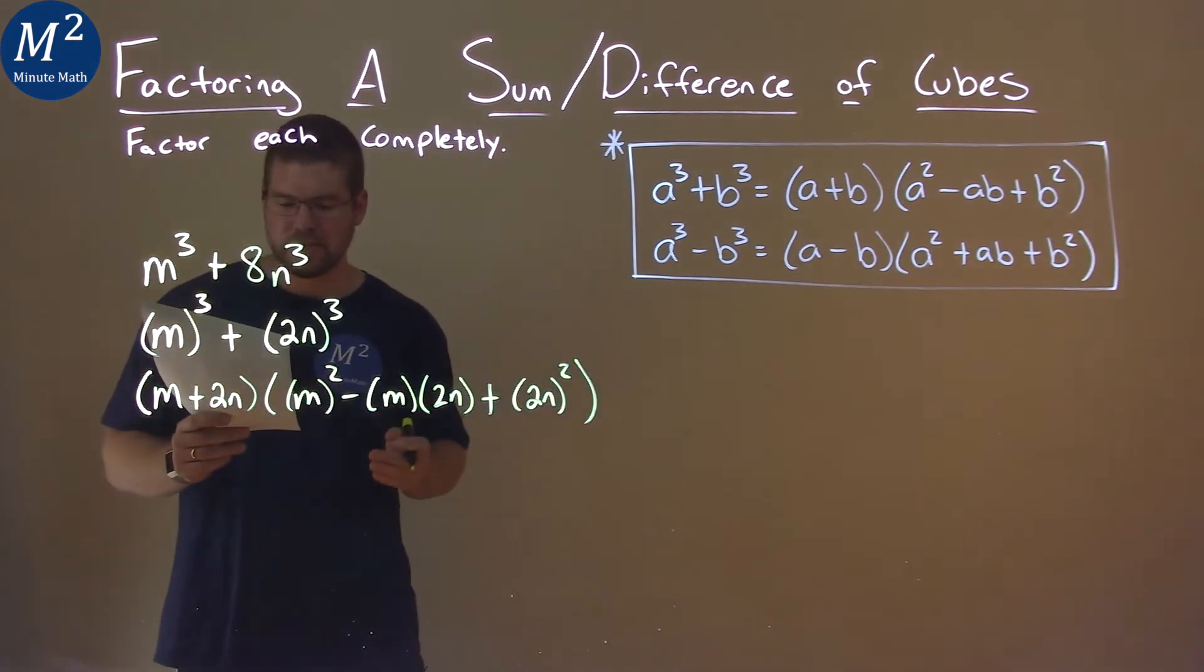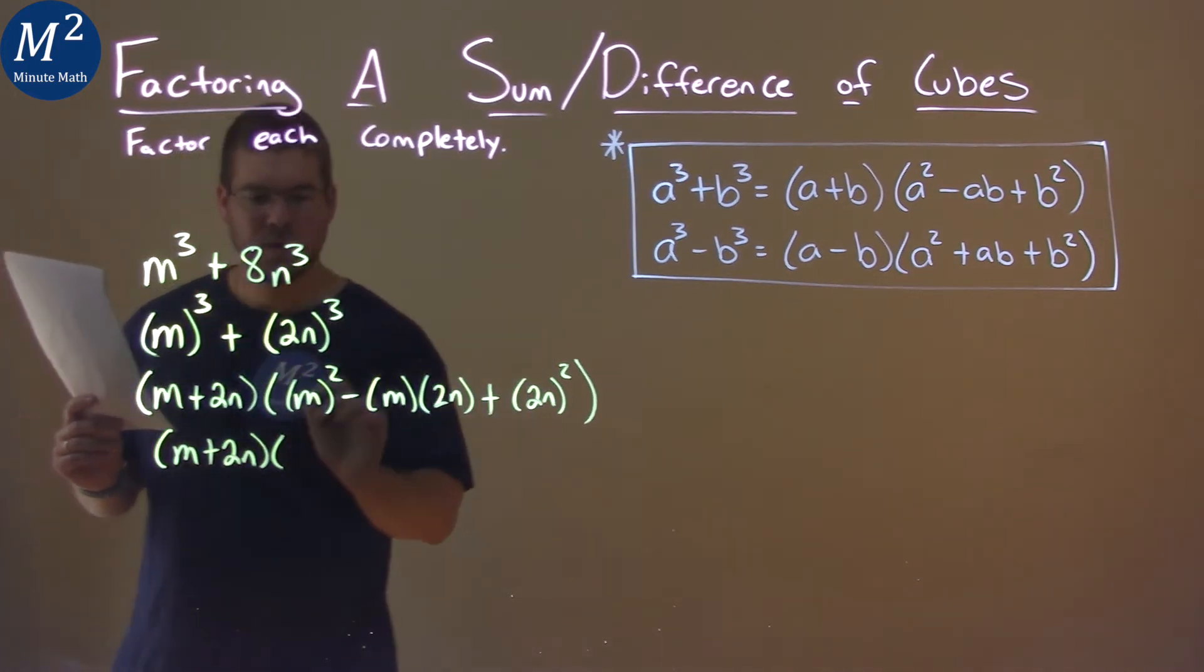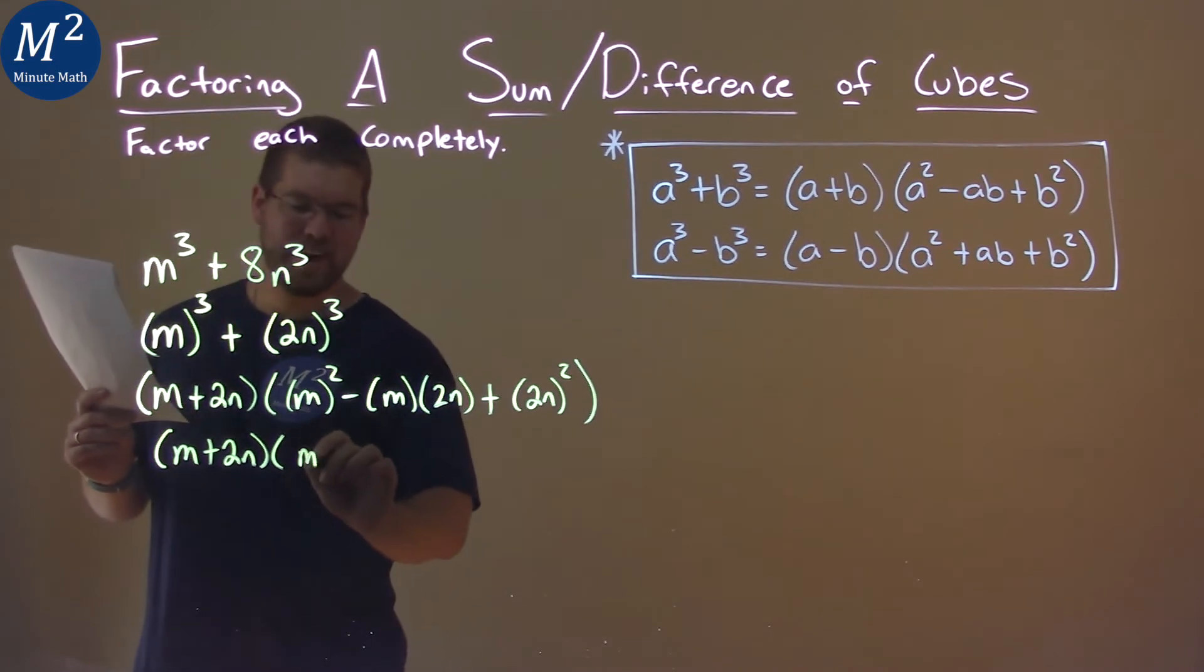And now we want to simplify. m plus 2n. m squared is, well, m squared.